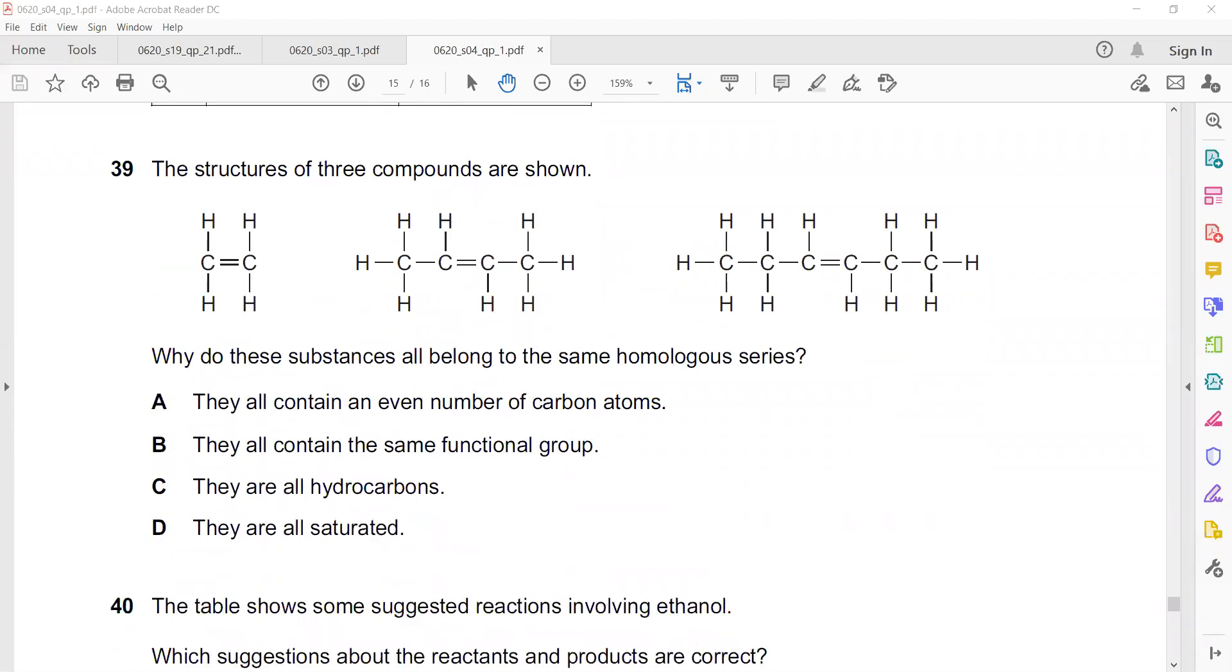Question 39. The structures of three compounds are shown. Why do these substances belong to the same homologous series? Belonging to a homologous series does not mean they should be hydrocarbons. Even alcohols can be homologous. Like for example, methane is also a hydrocarbon, but methane does not belong to the same series. They are all hydrocarbons, but that is not the reason why they belong to the same homologous series. The properties of homologous series: they have similar chemical properties, physical properties gradually change, each member differs by CH2, same method of preparation or same functional group. Because they all have the same functional group, which is C double bond C. That's why they all belong to the same homologous series.